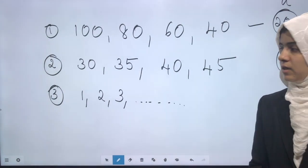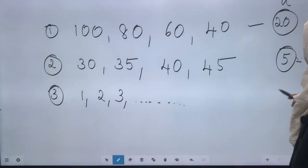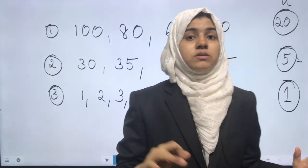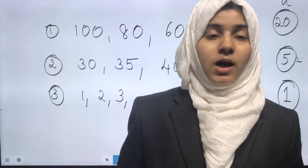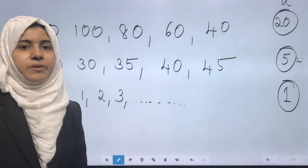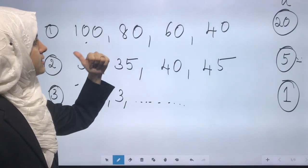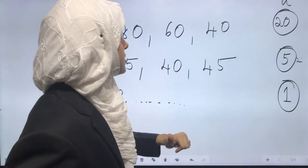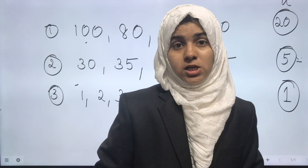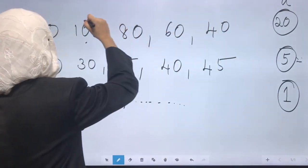Then third one with common difference one. So let me ask you a question: how many terms are there in the first AP? First term is 100, second term is 80, third term is 60, and fourth term is 40. So there are four terms in this AP.